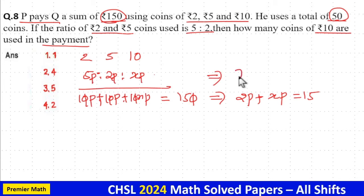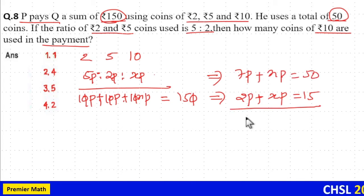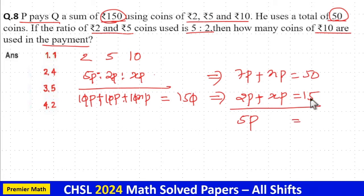This will become 7 part plus X part. Subtracting the previous equation, 7 part minus 2 part is equal to 5 part, which is equal to 35.